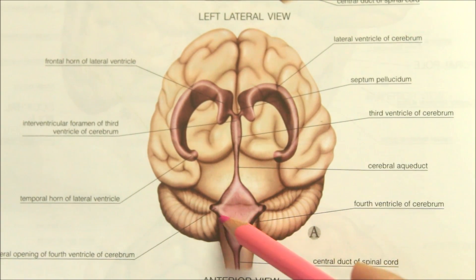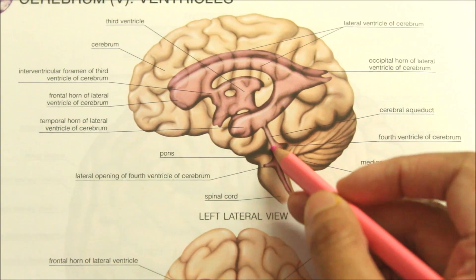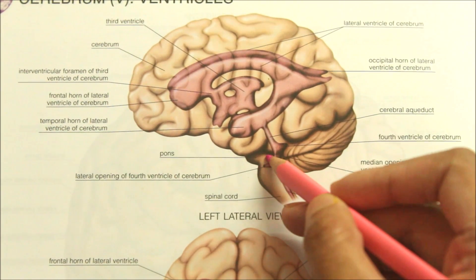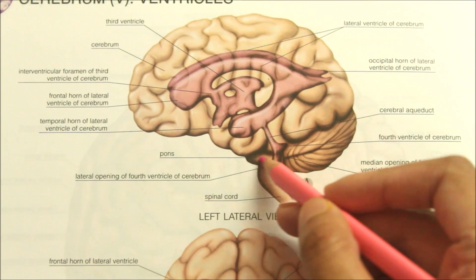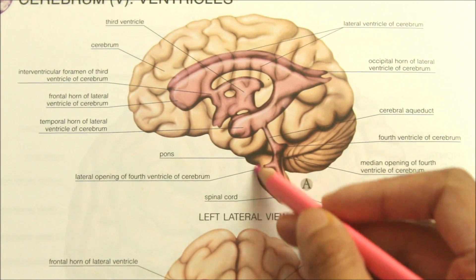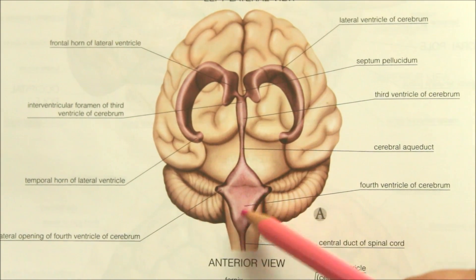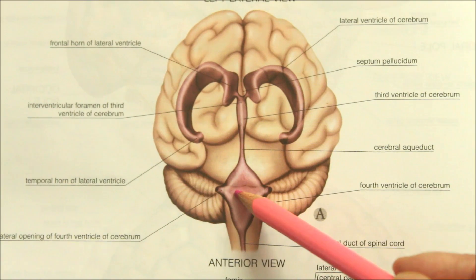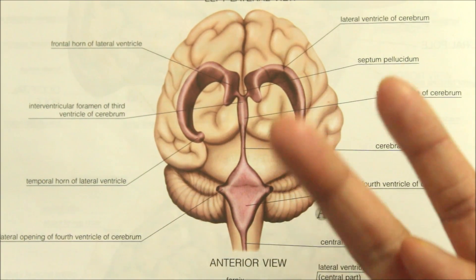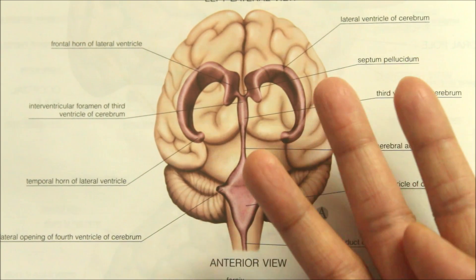The floor of the fourth ventricle is also called the rhomboid fossa because of its rhomboidal shape. It is formed by the posterior or dorsal surface of the pons and the upper part of the dorsal surface of the medulla oblongata. The floor is lined by three structures: ependyma, a thin layer of neuroglia beneath the ependyma, and a layer of gray matter forming various nuclei.